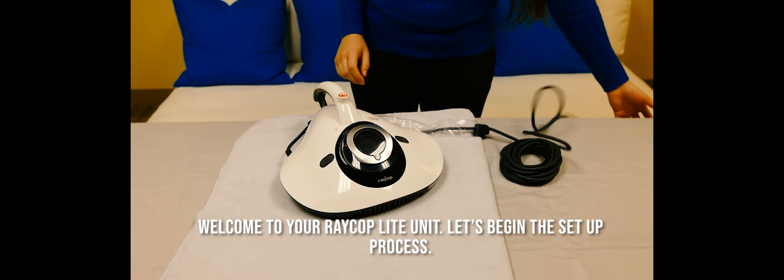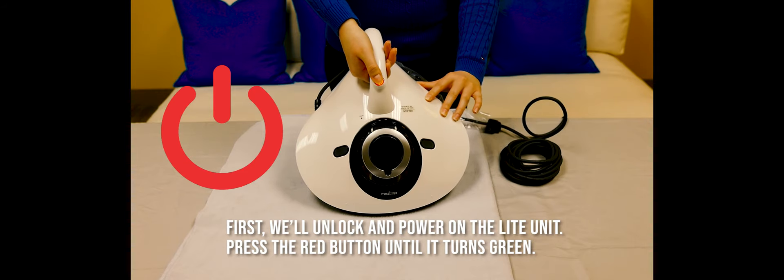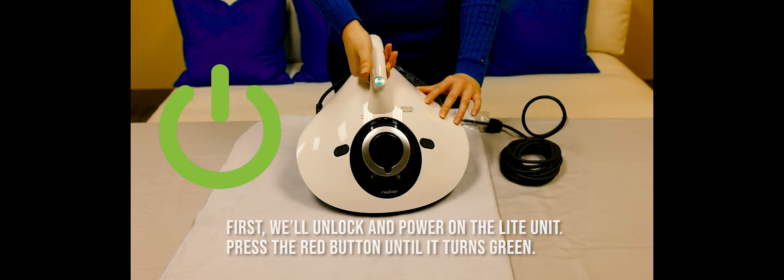The power button will glow a steady red. Press and hold for 3 seconds until it turns green. Then press the green button. The power button will turn blue and the vacuum will turn on.